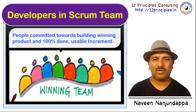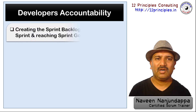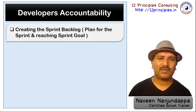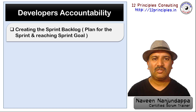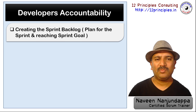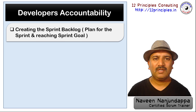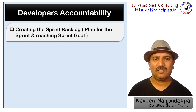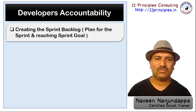Let's look at what are their accountabilities. The developers' accountability as per Scrum includes creating the sprint backlog. The sprint backlog is the plan to reach the goal, that is the sprint goal, and also helps how the team can inspect and adapt during the sprint. The sprint backlog guides the team to inspect and adapt and see where their plans can change, keeping the focus on the goal.